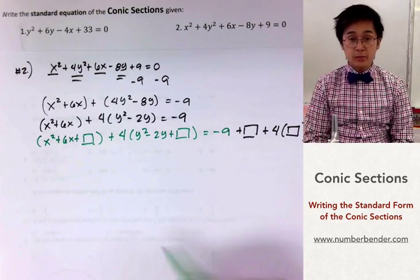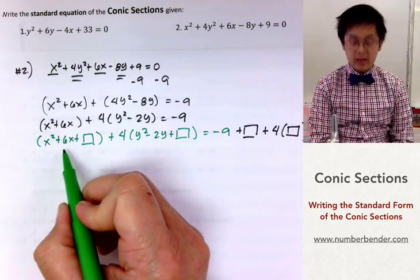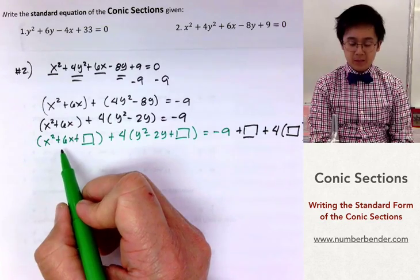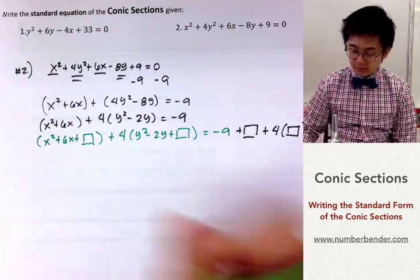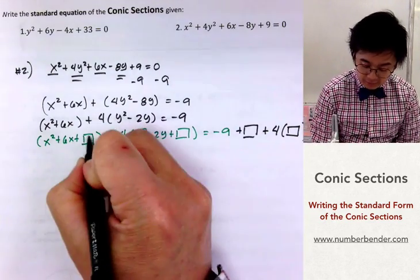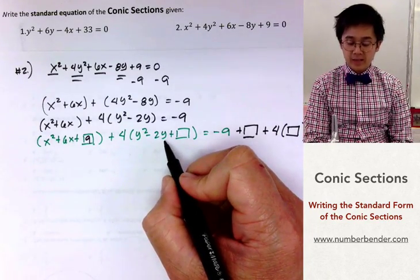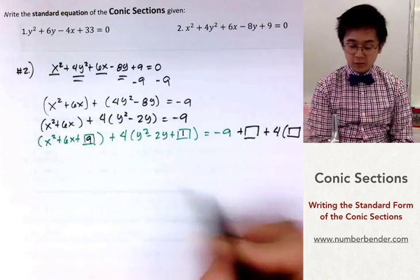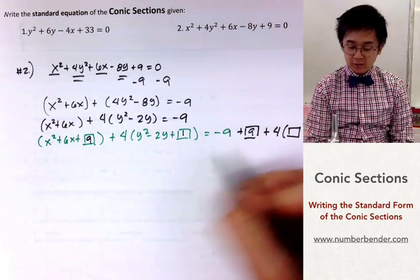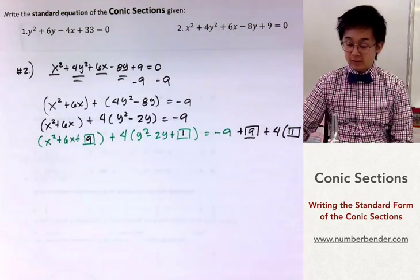To fill in the number in the box for the first group, half of 6 is 3 and 3 squared is 9. So this is simply 9. And on the second group half of negative 2 is negative 1 and negative 1 squared is 1. So you have 9 on this side and you'll add 1 on this side as well.